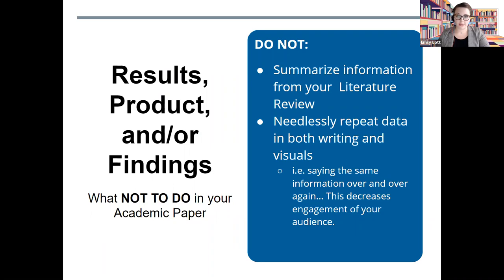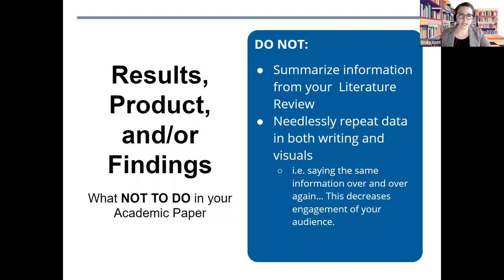Here are some things not to do in your academic paper regarding your results, products, or findings element. Do not summarize information from your literature review. And do not needlessly repeat data in both writing and visuals. For example, if you created a clear bar graph with all parts labeled — including x and y axes, colors or shading with a key, and qualifiers on top of each bar — you do not need to translate that bar graph word for word into your academic paper, because the graph is already doing that explanation for you. Rather, go deeper with your results, pointing out potential trends or other pieces of information that will be critical to your analysis.